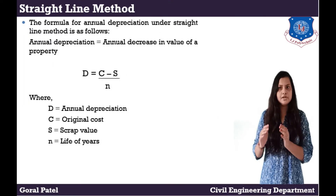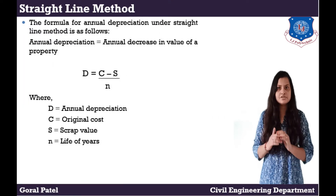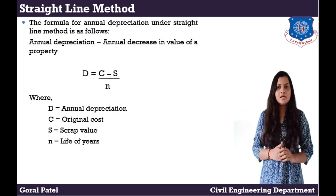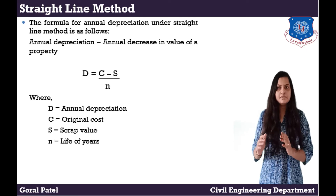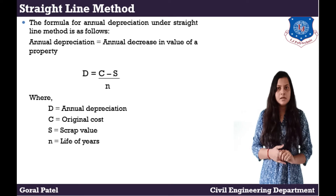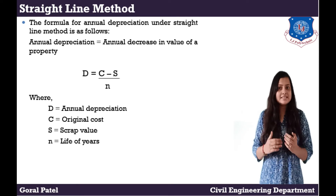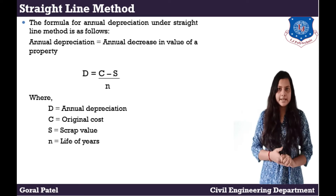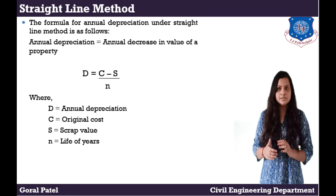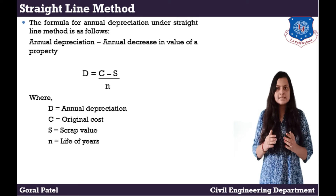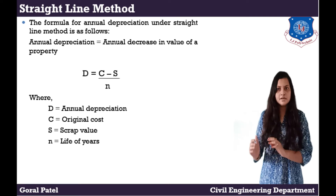The formula for annual depreciation under the straight line method is as follows. Annual depreciation D is equal to the annual decrease in value of a property: D = (C - S) / N. Where D is annual depreciation, C is original cost, S is scrap value, and N is life in years.